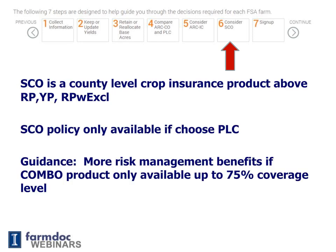Step six is to consider SCO. SCO is a county-level crop insurance product that provides coverage above RP, YP, and RP with exclusion. SCO is only available if you choose Price Loss Coverage. Our guidance would be that there are more risk management benefits when the combo product only has up to a 75% coverage level. If you have an 85% coverage level product available to you, SCO has very few risk management benefits.